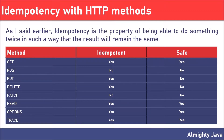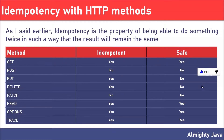GET is idempotent and safe, because no matter how many times you execute the GET request, you will always receive the same response. POST is neither idempotent nor safe, because when you execute the POST request, every time it will save the data.